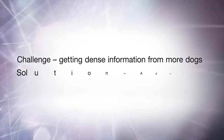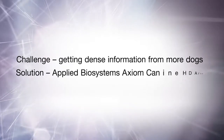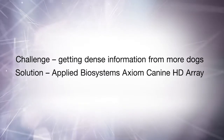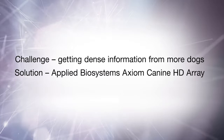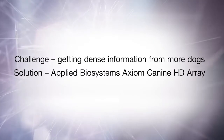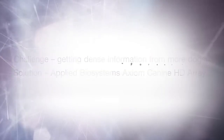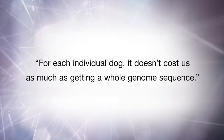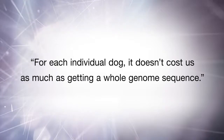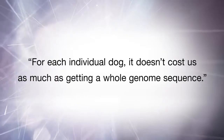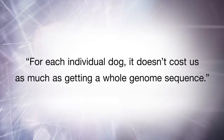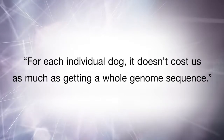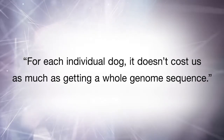And that's kind of what the Axiom gives us. It's giving us a lot of information on each individual dog, but in a way that doesn't cost as much as getting a whole genome sequence. Because of that, we can actually run a lot more dogs and get the sample sizes up.